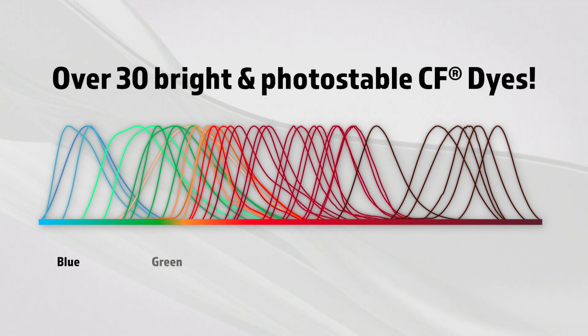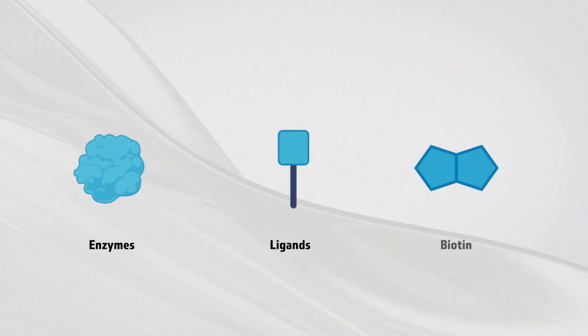The kits are also offered with the broadest range of fluorescent labels available, featuring over 30 bright and photostable CF dyes, from blue to near-infrared emission. Conjugation kits are also available for several enzymes, small ligands, biotin, and more.